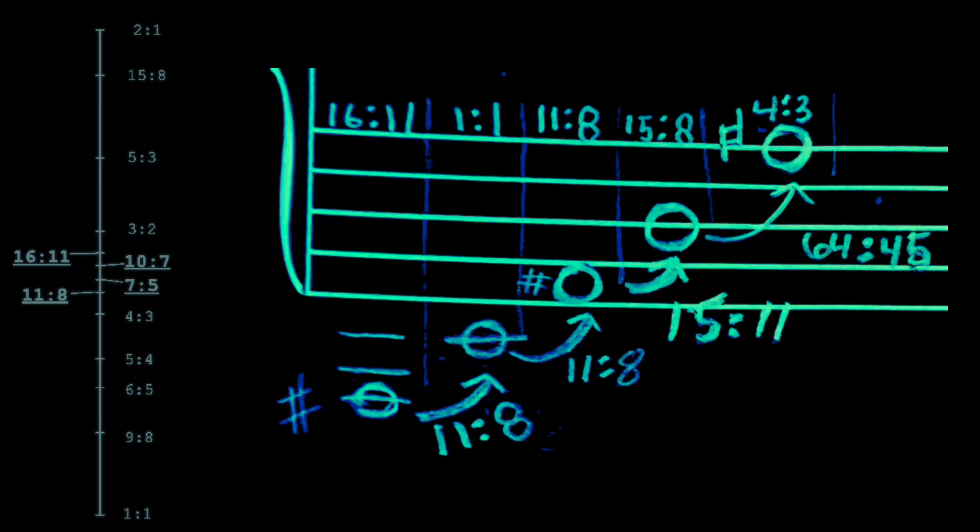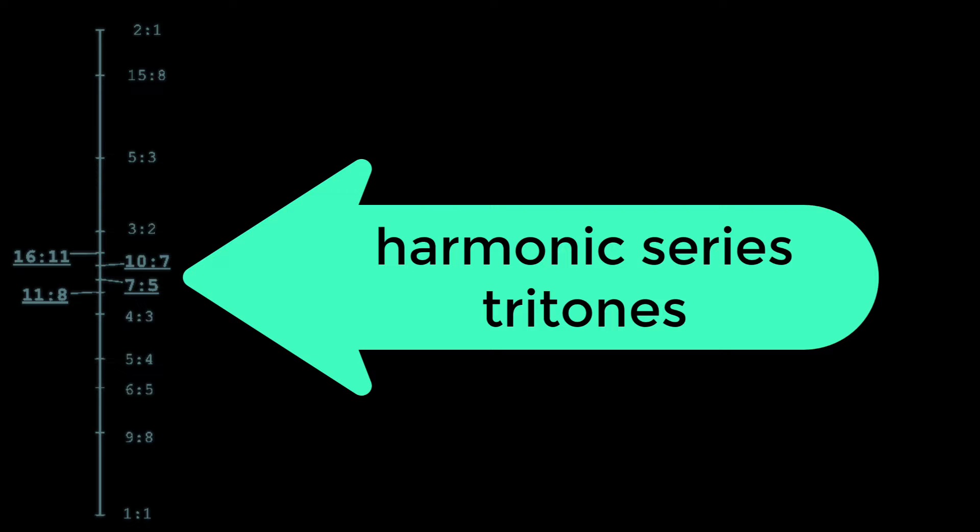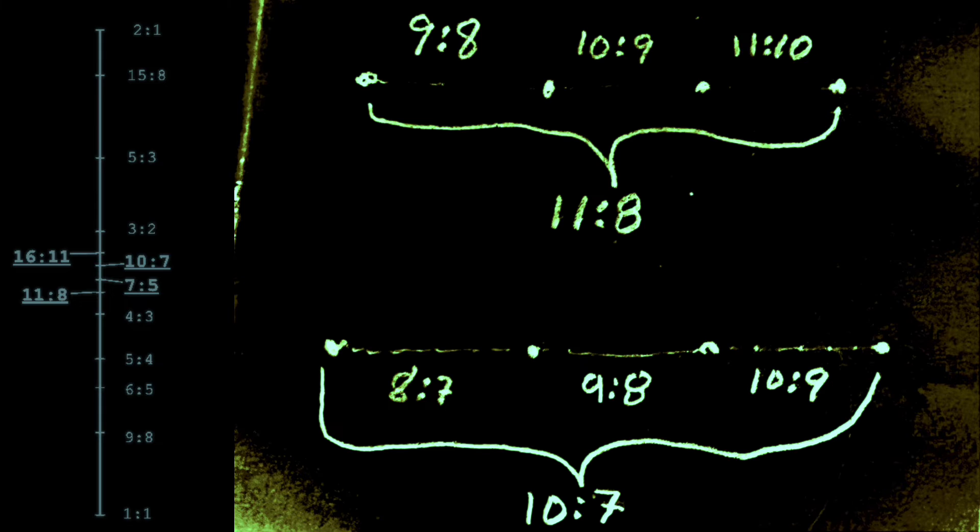So those are the tritones of the harmonic series: 11 over 8, 7 over 5, 10 over 7, 16 over 11. Only the 10 over 7 and the 11 over 8 are tritones. 10 over 7 is made up of an 8 over 7, a 9 over 8, and a 10 over 9. The 11 over 8 is a 9 over 8, a 10 over 9, and an 11 over 10.